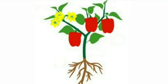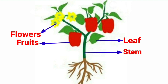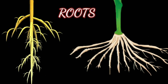The shoot system has a stem, branches, leaves, buds, flowers and fruits. The root system includes the roots. For the plant to grow and remain healthy, each of these parts has to carry out its function properly.